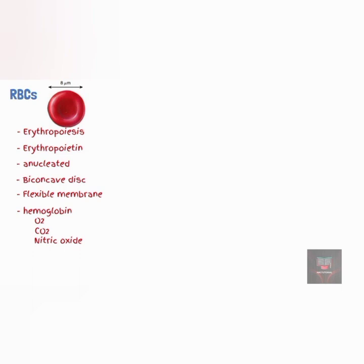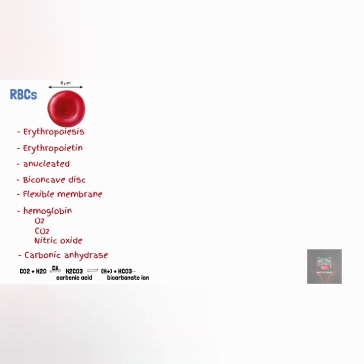Red blood cells also contain the enzyme carbonic anhydrase, which catalyzes the conversion of carbon dioxide and water to carbonic acid, allowing about two thirds of carbon dioxide to be transported in blood plasma from tissue cells to the lungs in the form of bicarbonate ion. This action of carbonic anhydrase also serves as an important buffer in the body, making it possible to regulate the body's pH.